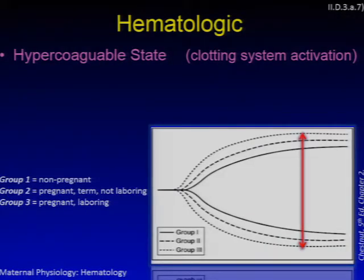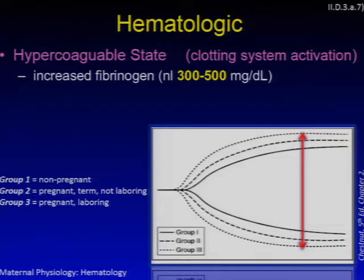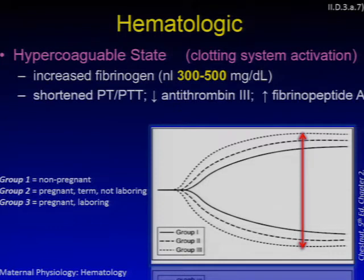Pregnancy represents a hypercoagulable state, in part by virtue of clotting system activation. Fibrinogen is increased, with normal levels of 300 to 500 mg/dL during term pregnancy. An early decrease in fibrinogen levels in cases of obstetric hemorrhage has been traditionally associated with severe hemorrhage requiring massive transfusion. PT and PTT are shortened, antithrombin 3 is decreased, and fibrinopeptide A is increased — thus pregnant women are at risk for thromboembolism.